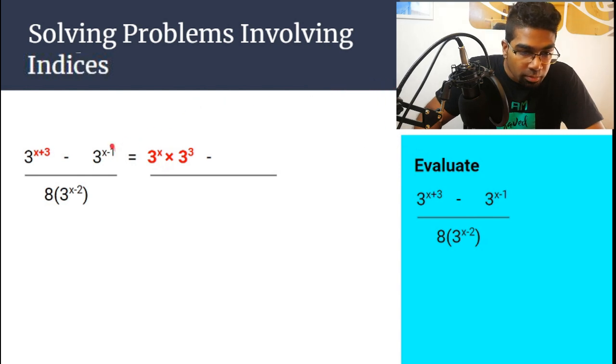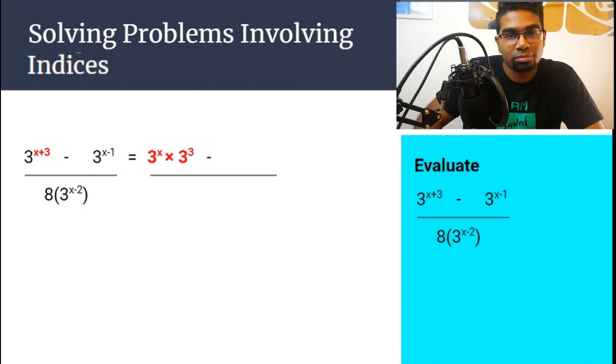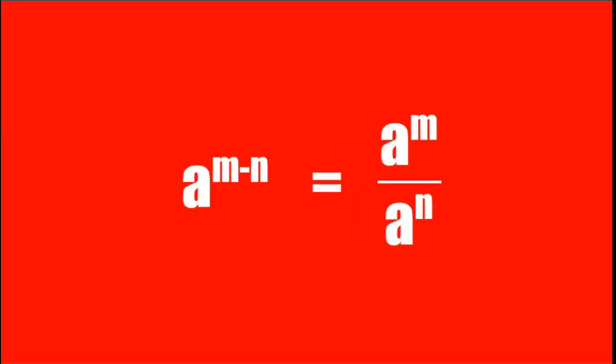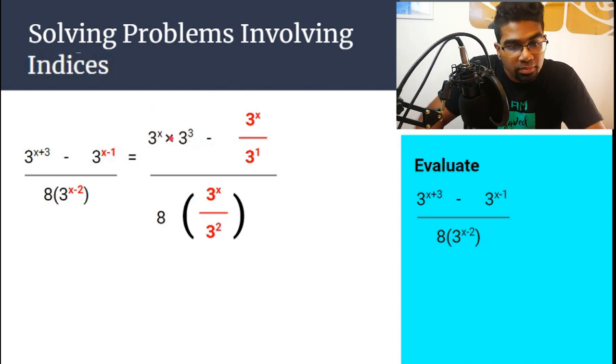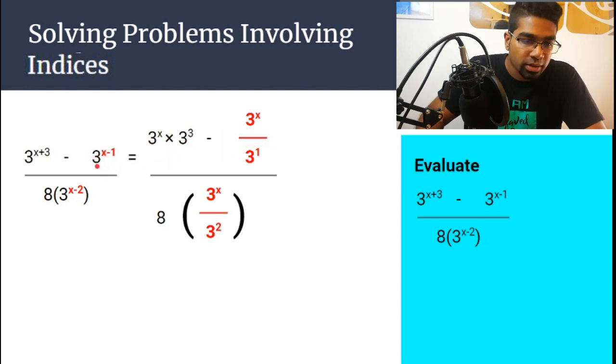And then here is minus. We have another minus at the bottom as well. So for minus, we use the second rule. When we have minus, when the index has something minus another thing, then we use divide instead of multiply. So when it's plus, we use multiply. When it's minus, we use divide. So this is 3x minus 1, so it will become 3x divided by 3 to the power of 1. And this is 3x minus 2, so it will become 3 to the power of x divided by 3 to the power of 2.